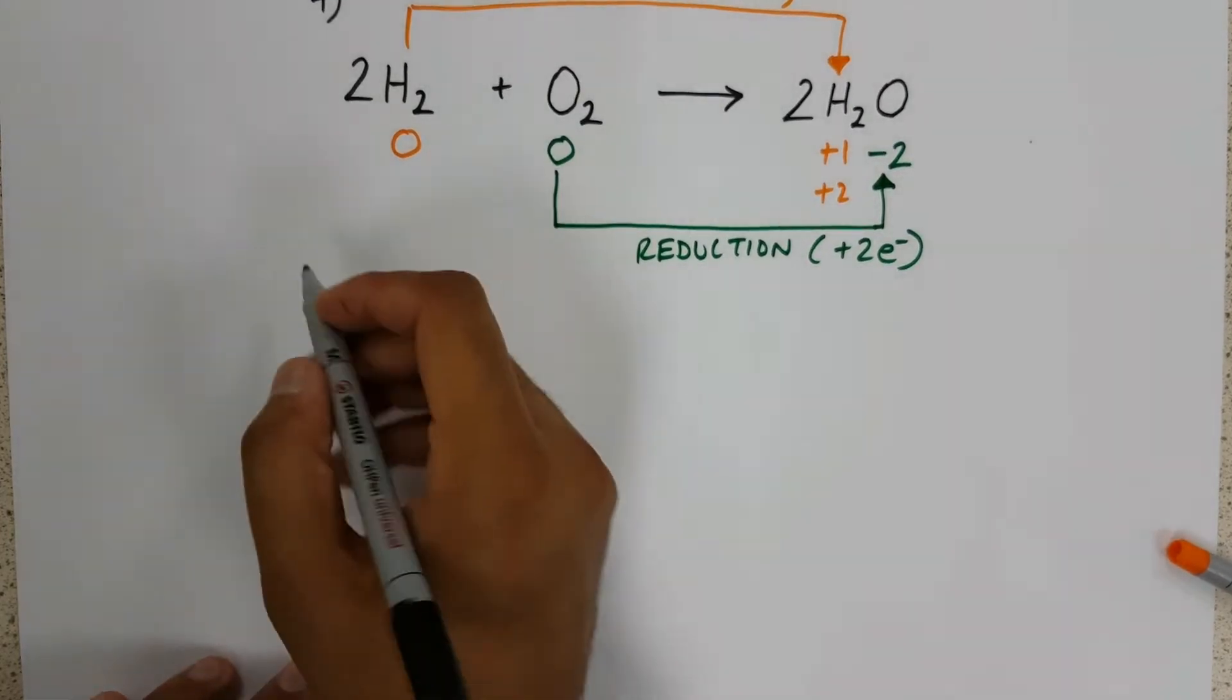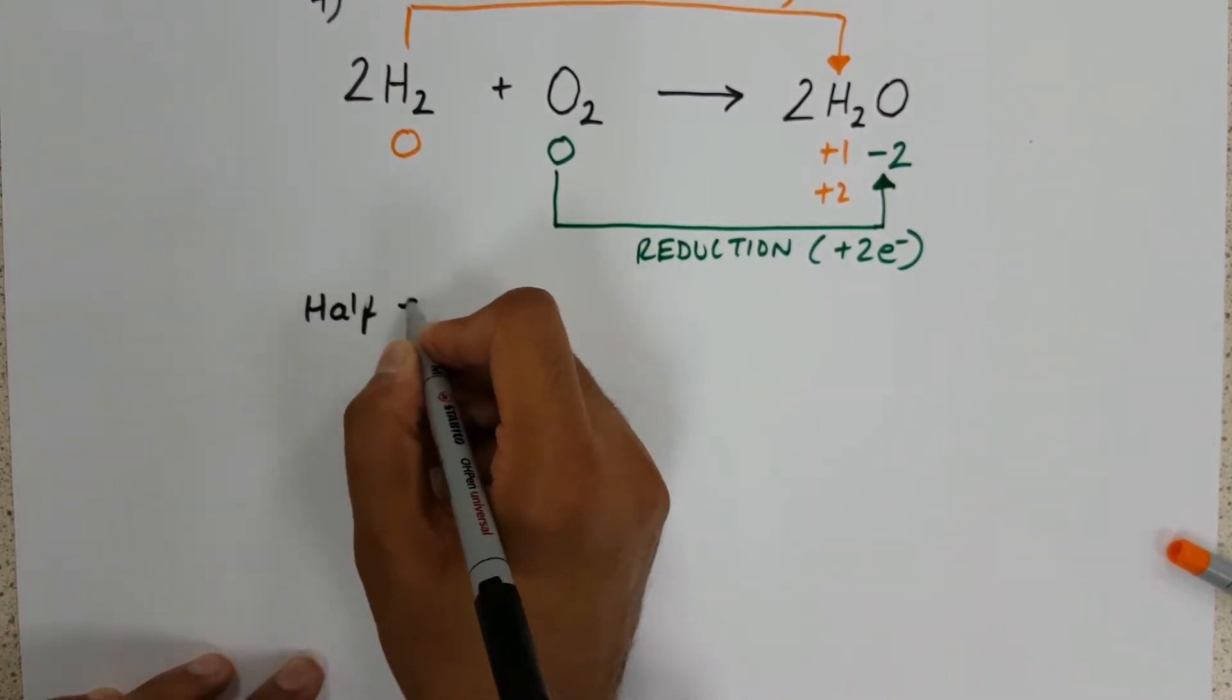As I already mentioned, there are no spectator ions, so we can skip straight away to our half equations.